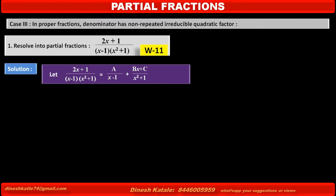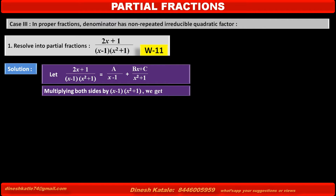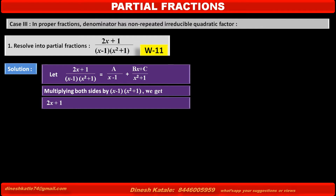To remove the denominators of each term, multiply both sides by their LCM, which is (x minus 1)(x squared plus 1). After multiplying, the left-hand side becomes 2x plus 1. The first term on the right becomes A into (x squared plus 1), and the second term becomes (Bx plus C) into (x minus 1). Consider this as equation 1.